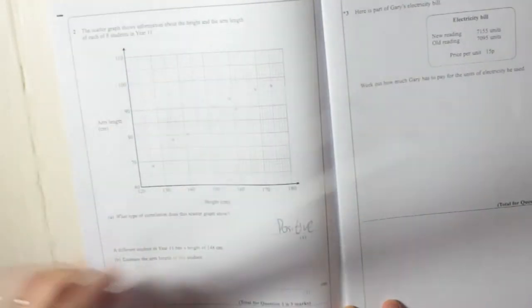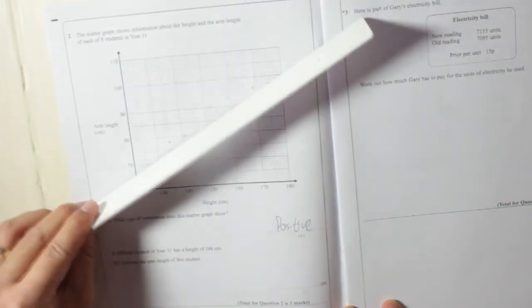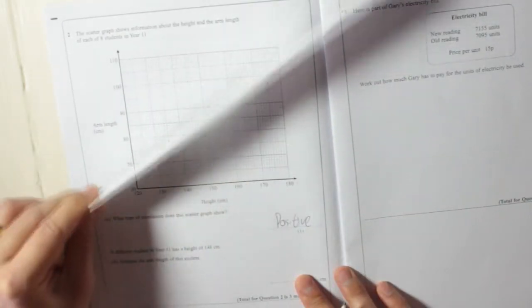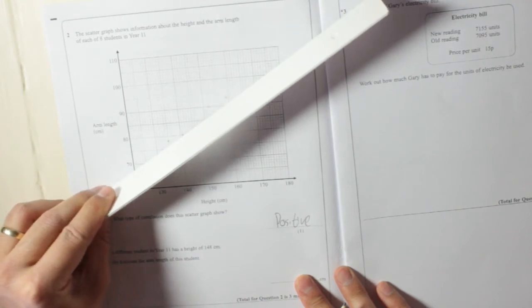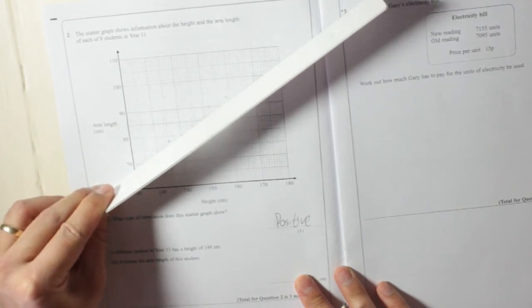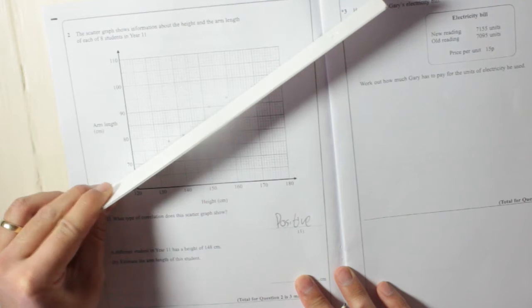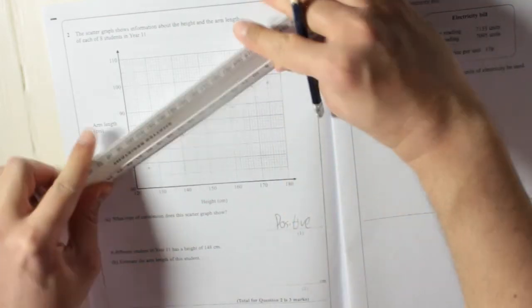And remember when you do that, you want to go in the right direction first of all. That's not the right direction, that's the right direction. And you want roughly the same amount of dots on either side of the line. Don't worry if you don't get it perfect, so that'll do.